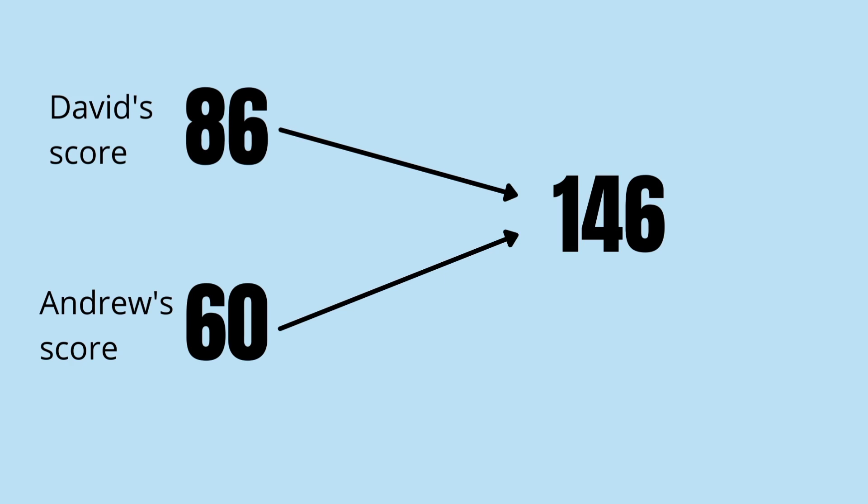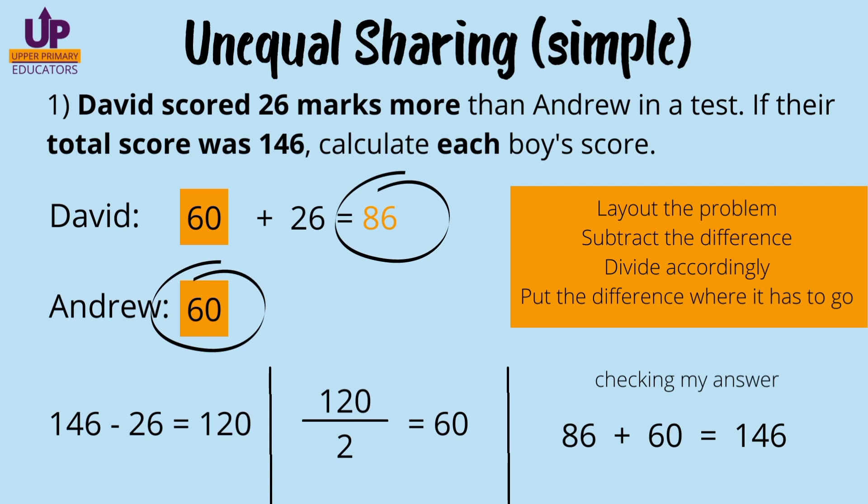Now we see that 146 is made up by adding 86 and 60. It's important for us to check our answer. We check by calculating the sum of David and Andrew's marks. We get back the whole, 146, so we are sure our answer is correct.